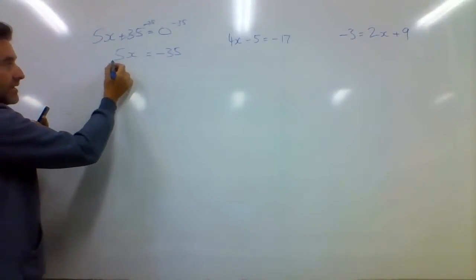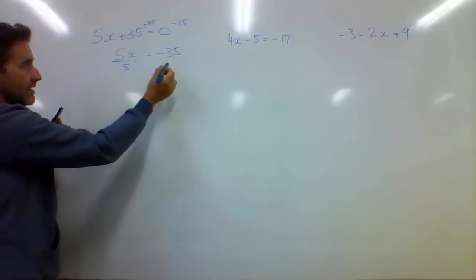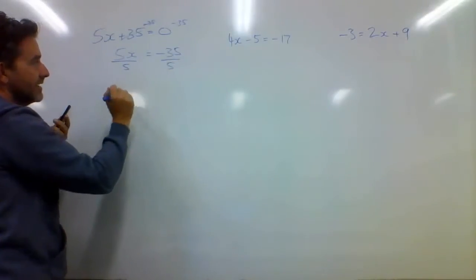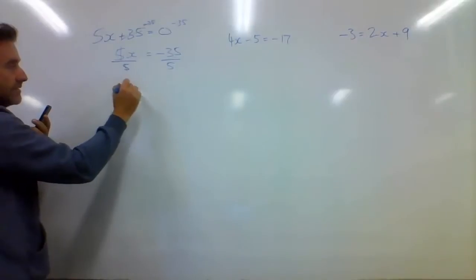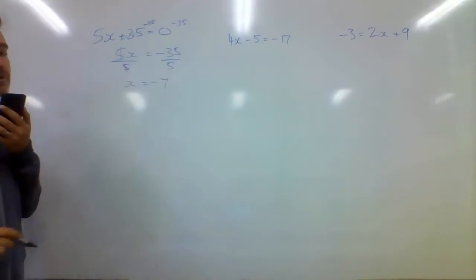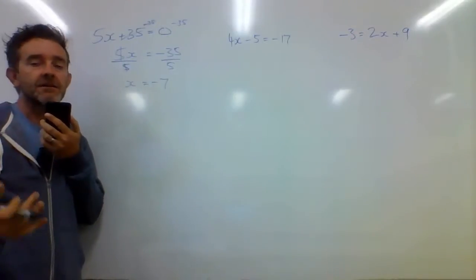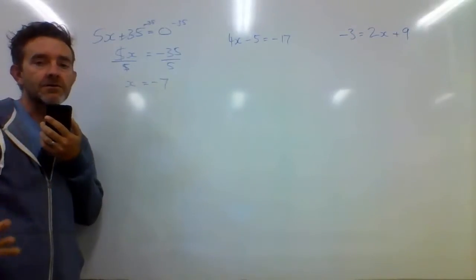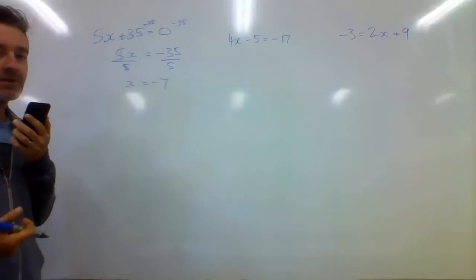And really what we're doing here is I'm just going to divide that side by 5, divide that side by 5. If I do that, those 5s cancel, and I'm left with x being equal to negative 7. Now, I've done the full working there, but like I said, you know that 7 and 5 go into 35, so you should be able to work that out just by inspection.